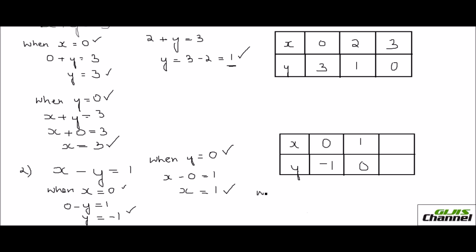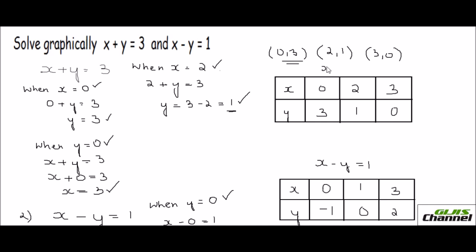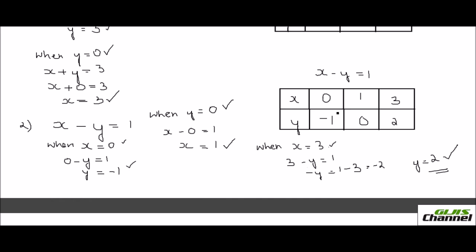You can use any number — there are no restrictions. Let's take when x equals 3. Then 3 minus y equals 1, so y equals 2. When x is 3, y is 2. So the ordered pairs for x minus y equals 1 are: 0 comma negative 1, 1 comma 0, and 3 comma 2.